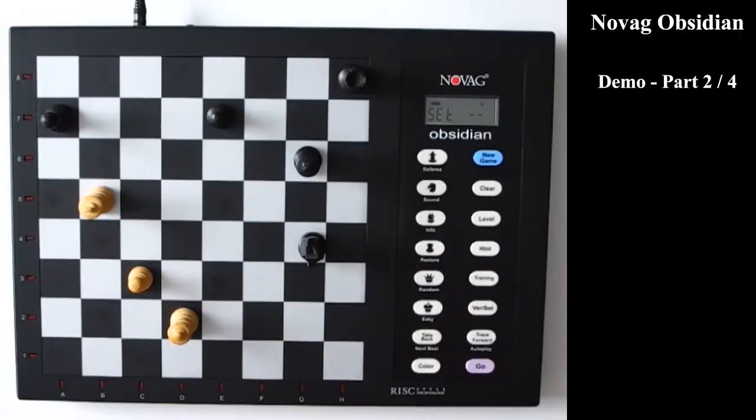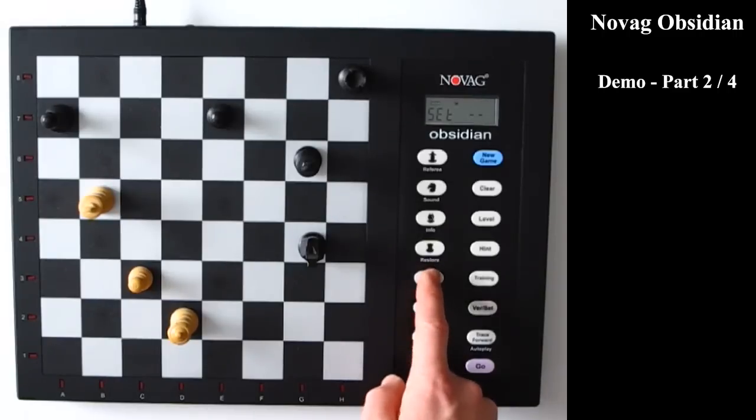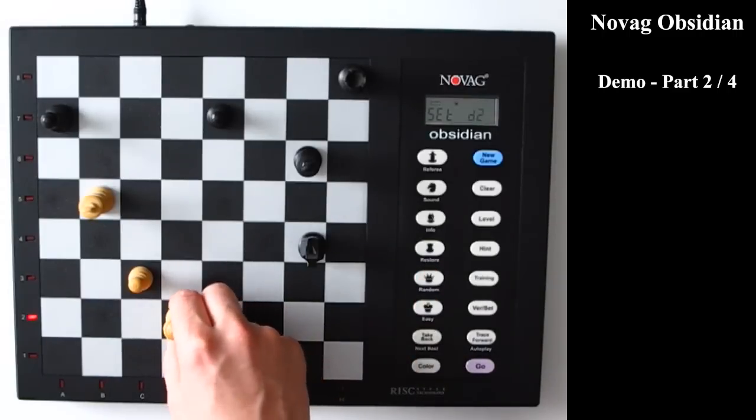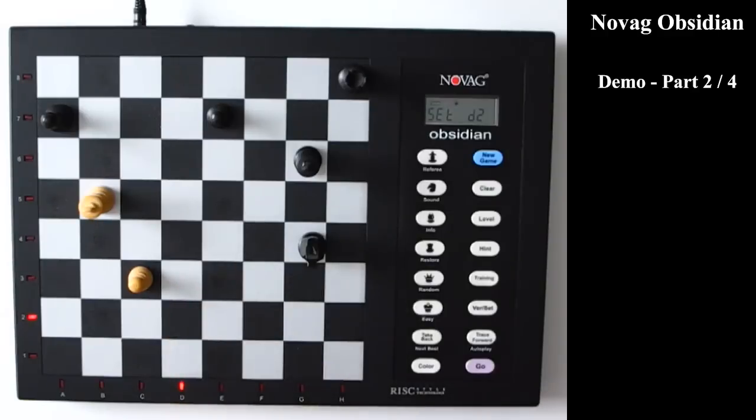I can also remove pieces again from my position. For example I want to remove the white queen right here. So I change colors to white. I press the queen button right here. I press it on the board. And now it's gone.